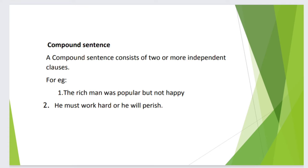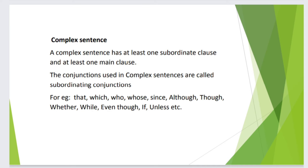A compound sentence consists of two or more independent clauses. For example: the rich man was popular but not happy. He must work hard or he will be punished. A complex sentence has at least one subordinate clause and at least one main clause.